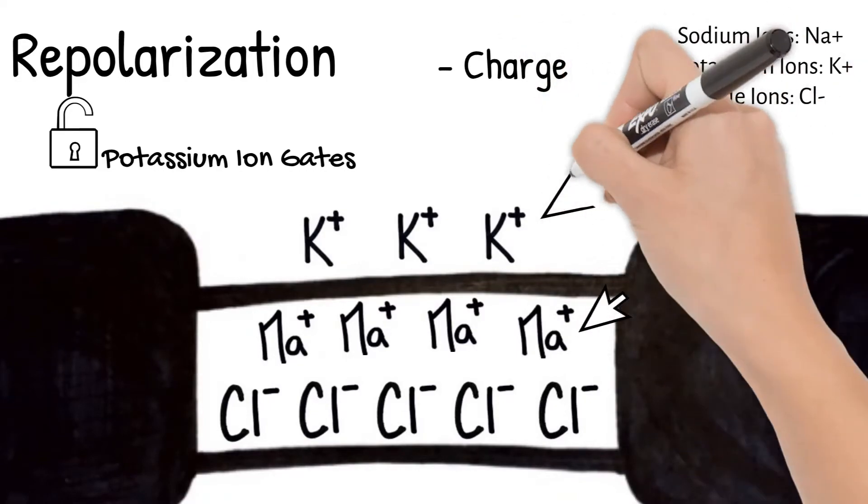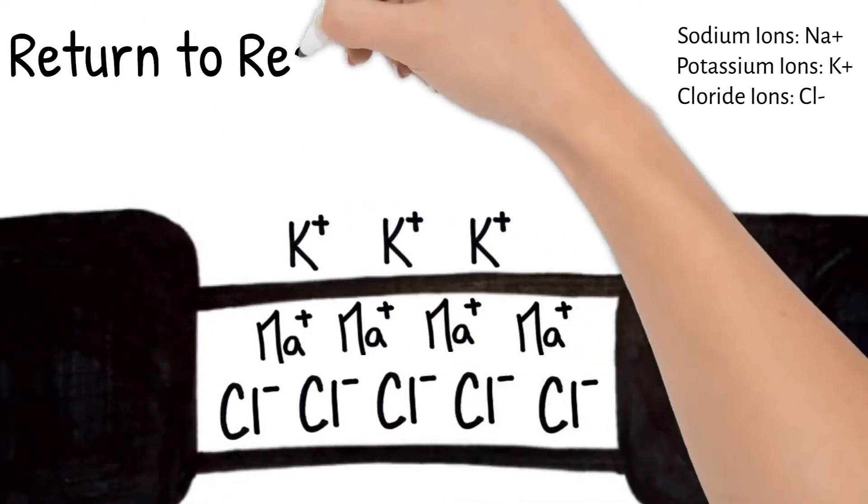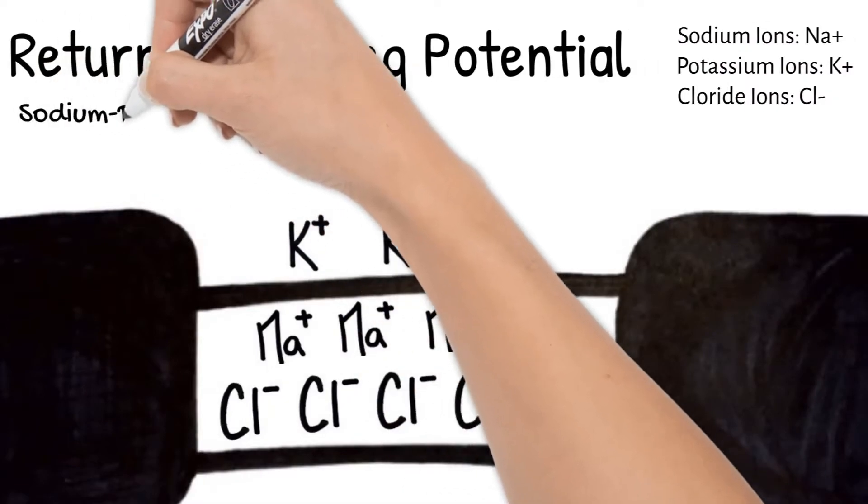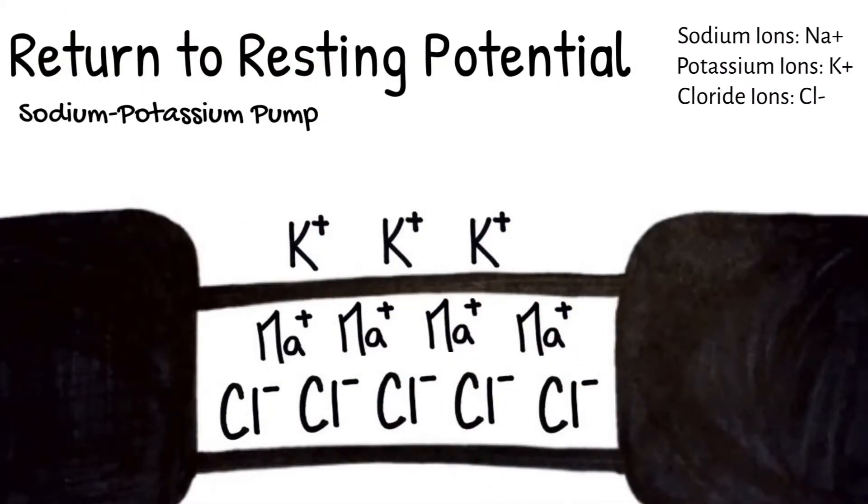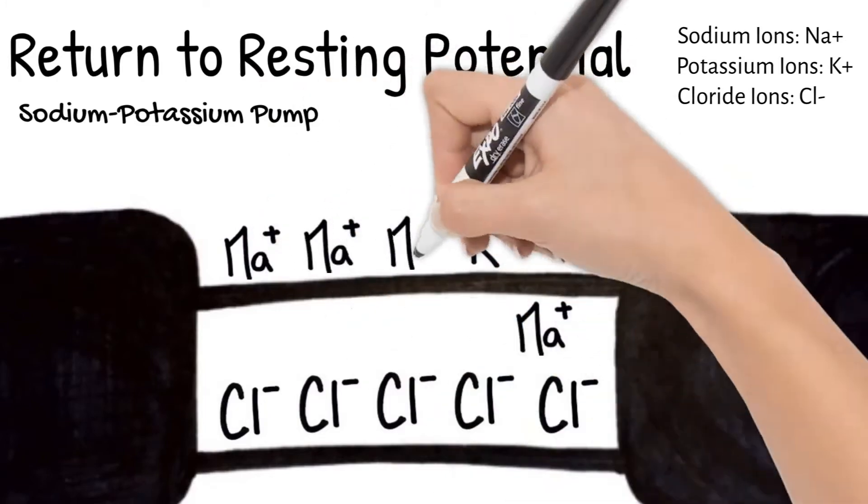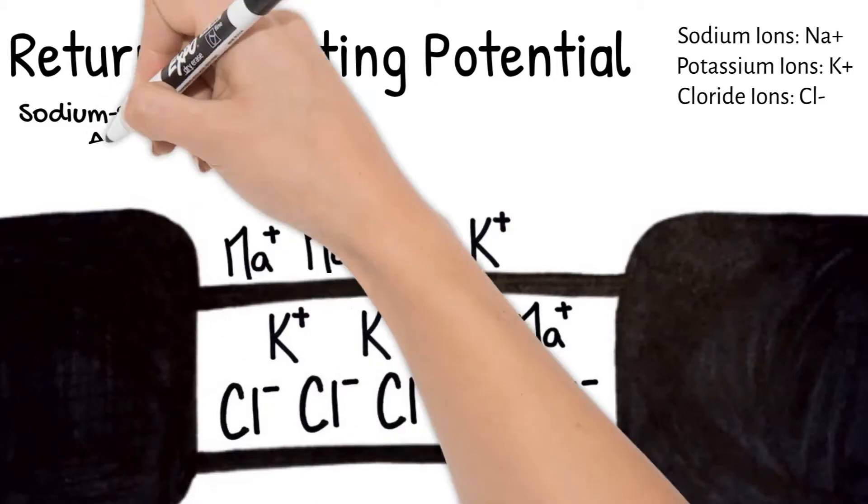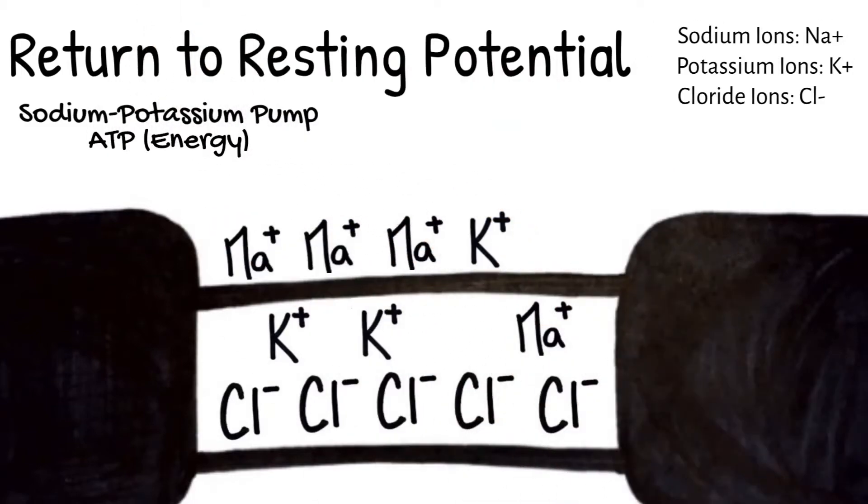But notice the sodium and potassium are on the wrong sides. To correct the ions, there is a sodium-potassium pump, which moves three sodium ions out for every two potassium ions it moves into the neuron. This requires ATP, or energy, to work.